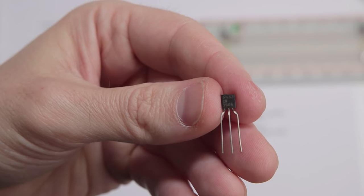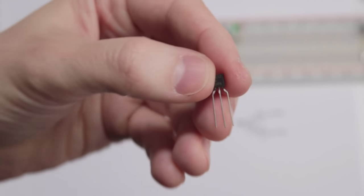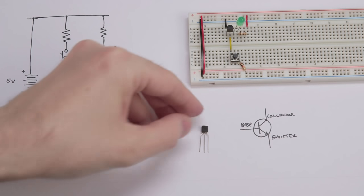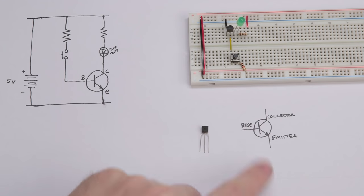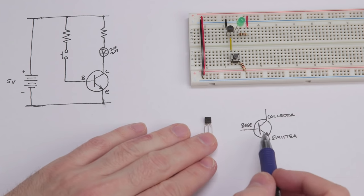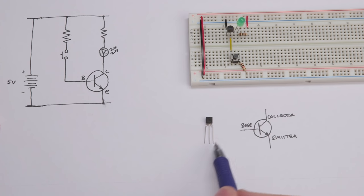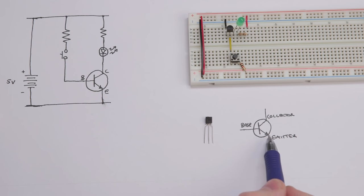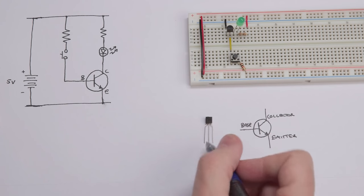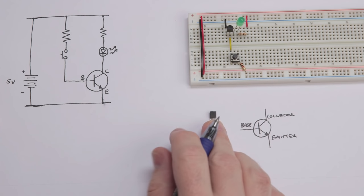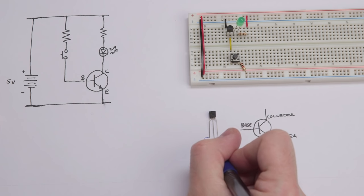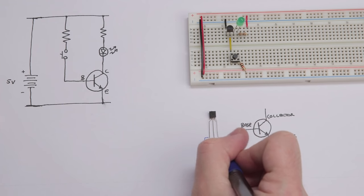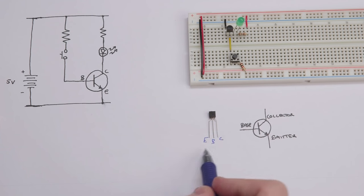This little guy here is a transistor, and the schematic symbol for it is this diagram. You can see there are three leads on the transistor, and those correspond to the three things here. We've got an emitter, a base, and a collector. This would be the emitter, the middle lead is the base, and this lead is the collector.